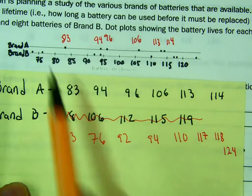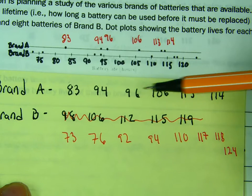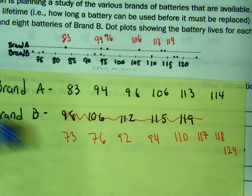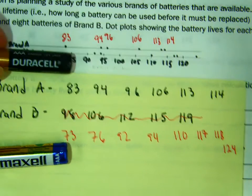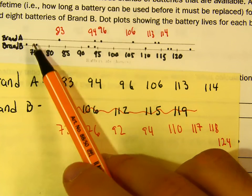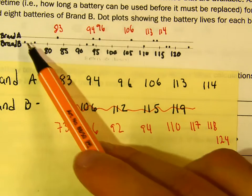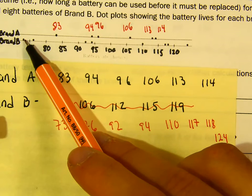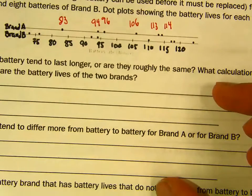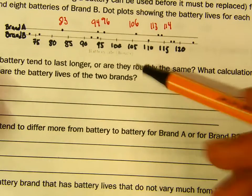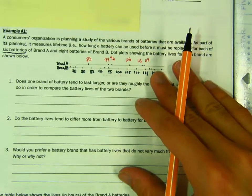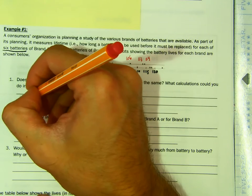The question is: looking at these two batteries, which one would you pick — brand A or brand B? This represents how long a random battery from each brand lives. What can we do to compare the two? Let's calculate the mean for each brand.